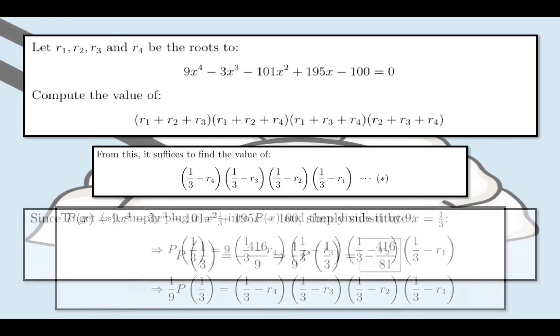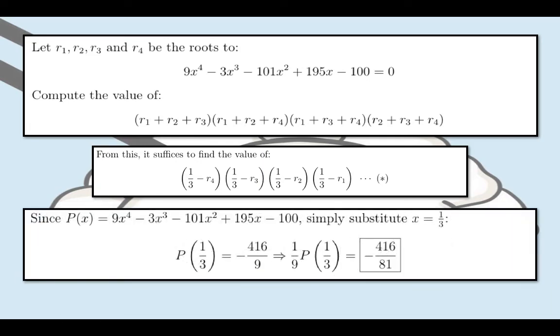Now all we have to do is to get P of 1 third. Since we know P of x equals 9x to the fourth minus 3x cubed minus 101x squared plus 195x minus 100, simply substitute x equals 1 third and evaluate.